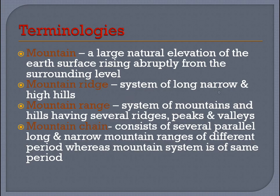A ridge is a system of long, narrow, high hills — so it's not too broad, it's long and narrow. A mountain range is a group of mountains and hills having several ridges, peaks, and valleys. A mountain chain consists of several parallel long and narrow mountain ranges.